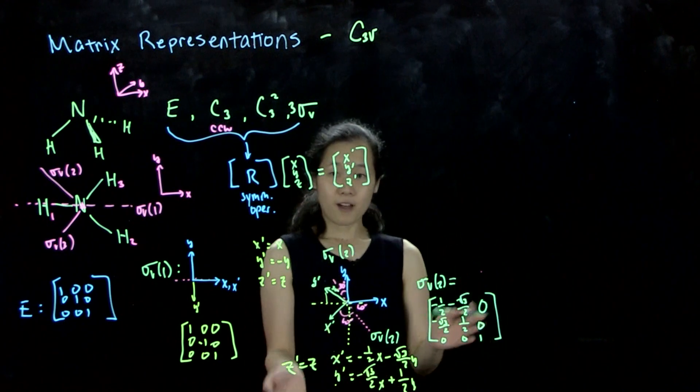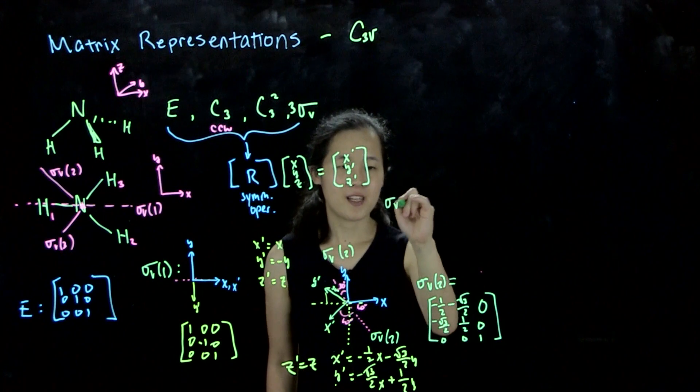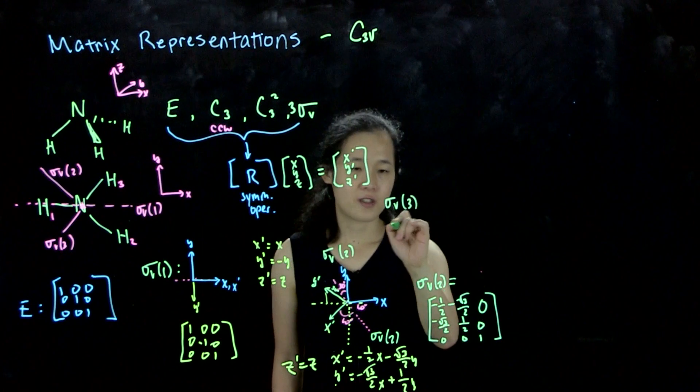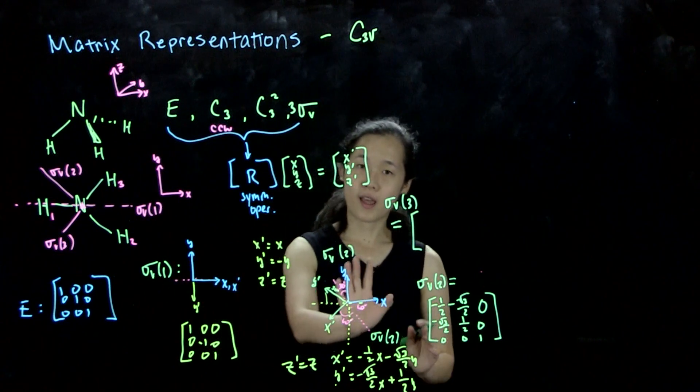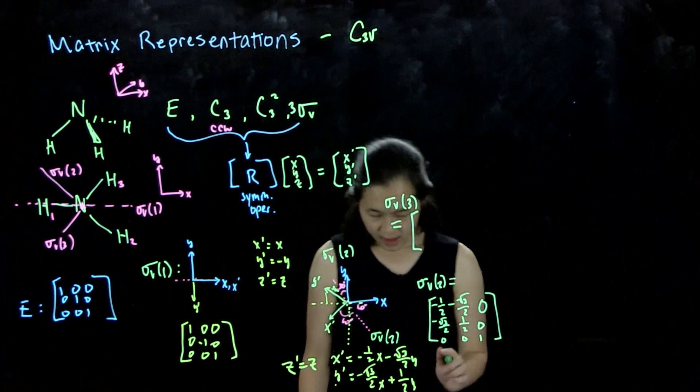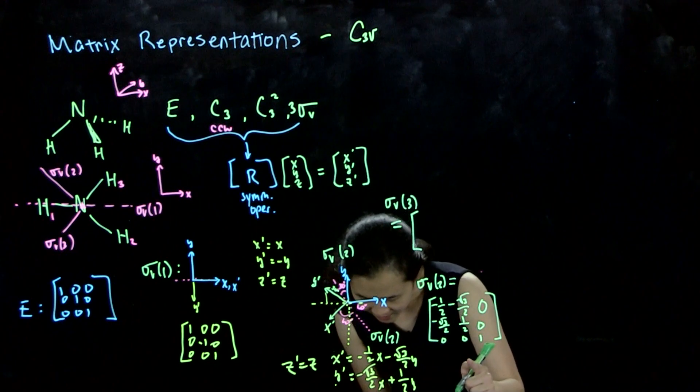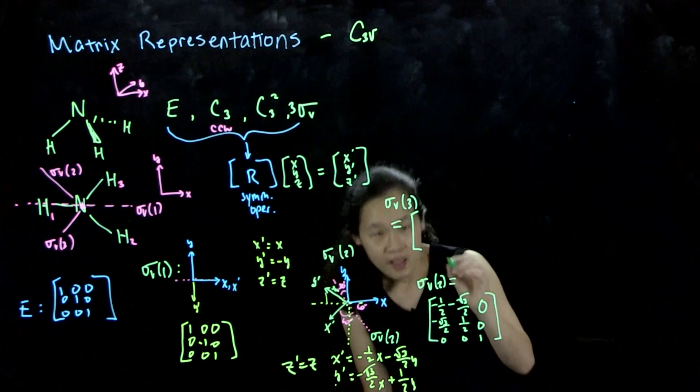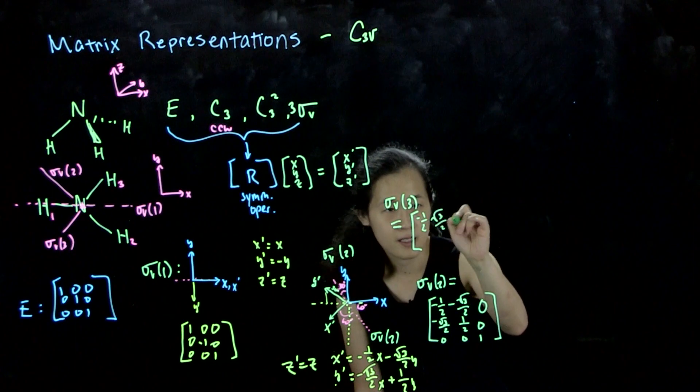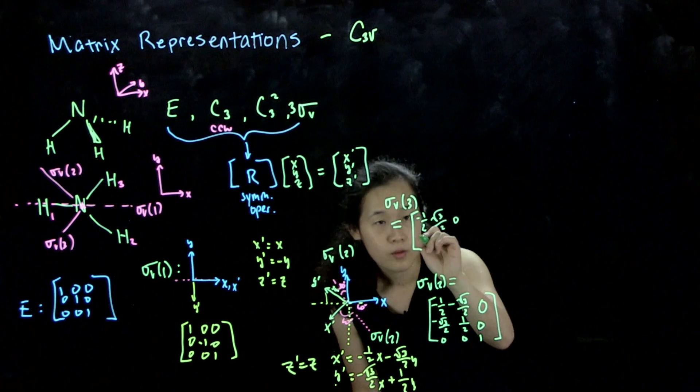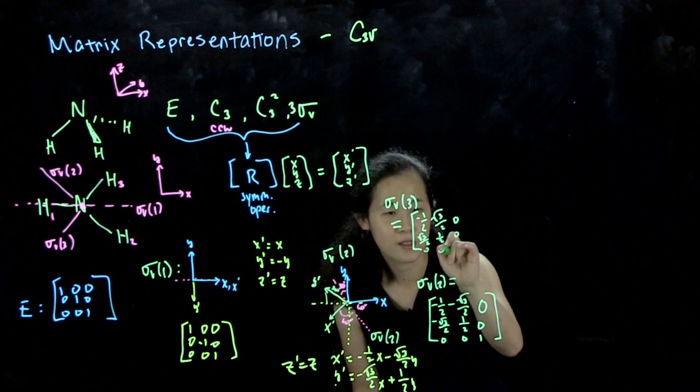And then without derivation, I'll let you do it in class, or I'll make you do it in class. Our sigma v3 is therefore going to be, it's a procedure in the same way you want to figure out where the x and y vectors go. I'll write it down, but I'm going to make you do it in class. So it is negative one-half, root 3 over 2, zero, root 3 over 2, one-half, zero, zero, zero, one.